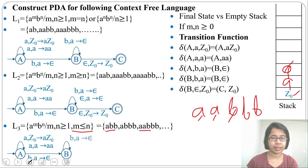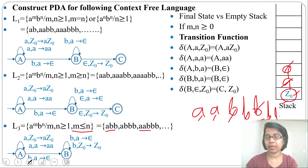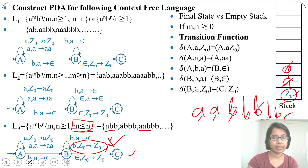Make a self-loop for b popping a: b, a → ε. After all a's are popped, there are still b's remaining but the stack only has Z0. So for the remaining b's, skip Z0: write b, Z0 → Z0 in a self-loop. Finally by ε, skip Z0 and go to the final state. This is the PDA for m ≤ n. If we remove the b, Z0 → Z0 transition, it becomes the PDA for m = n.